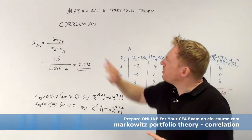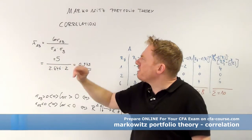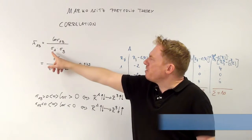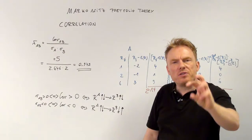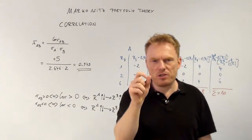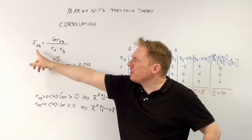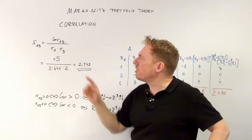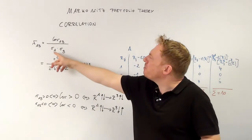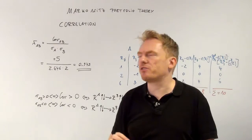We need to be talking about correlation. Correlation is defined as follows: covariance divided by the product of two different standard deviations. If we look at two different shares, the correlation coefficient equals the covariance between those two shares divided by the product of the standard deviations of both shares.